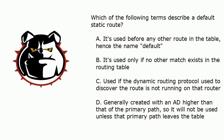Now, let's get to that practice exam question. Which of these terms describes a default static route? I've also got a bonus question for you that's not on the board, so stick around. Is it: A — it's used before any other route in the table; B — it's used only if no other match exists in the routing table; C — it's used if the dynamic routing protocol used to discover the route is not running on that router; or D — generally created with an AD higher than that of the primary path, so it will not be used unless that primary path leaves the table.